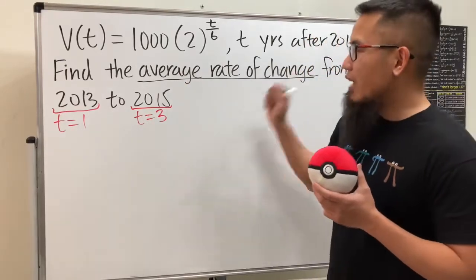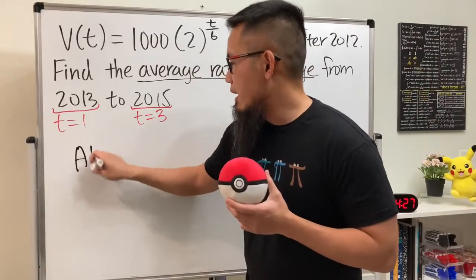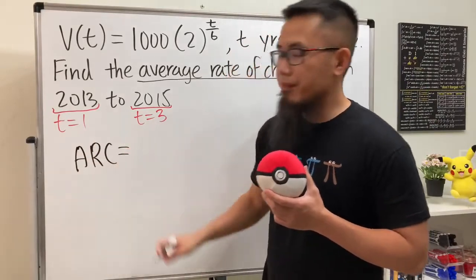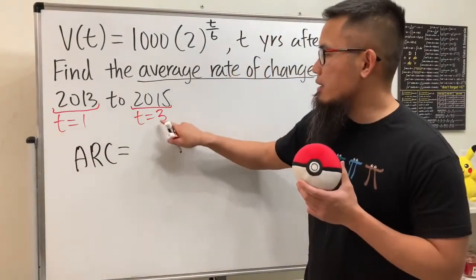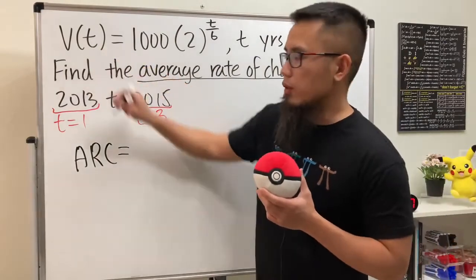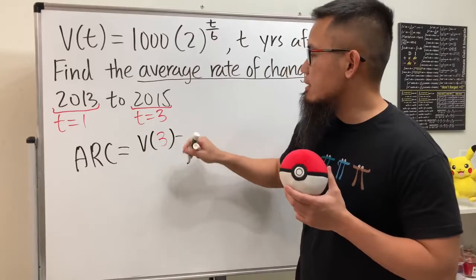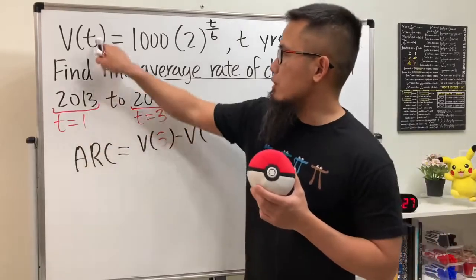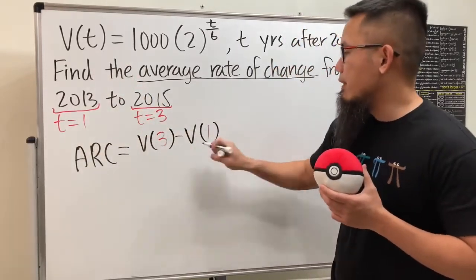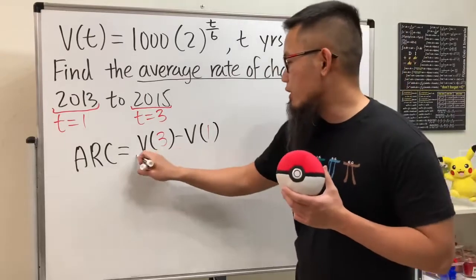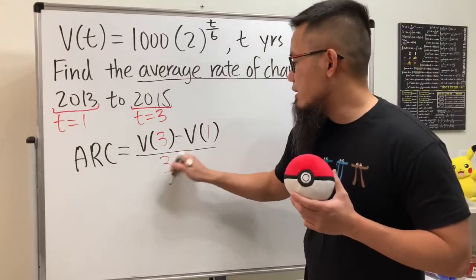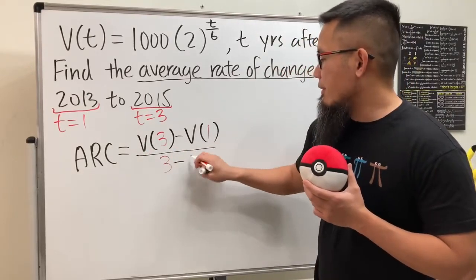Now for the average rate of change, remember the ARC formula. What we do is we plug in the end time into the function first, so we have V(3), and then minus V at the initial time, so you put down V(1), and don't forget to divide it by 3 minus 1.